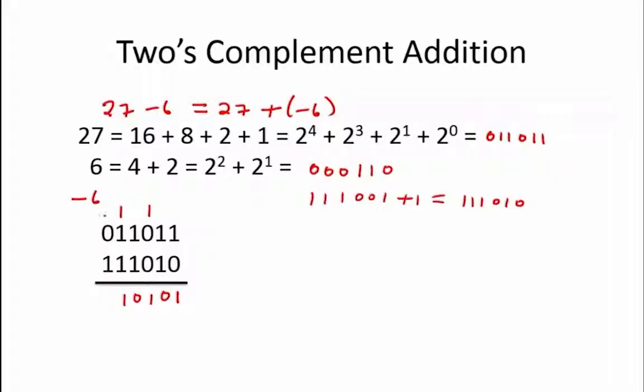We find that our result ends up having 7 bits. This most significant bit is dropped because we are working with 6-bit representation in this case.